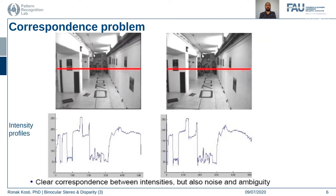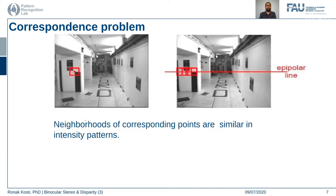We also saw the correspondence problem: if we plot an intensity profile along the scan lines in the left and right images, even though we can see visually that they are quite similar and a match has been made, it is not easy to match them automatically. Let's take an example.